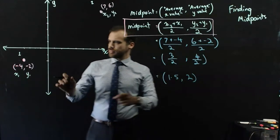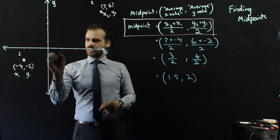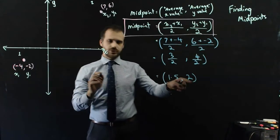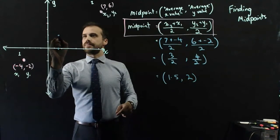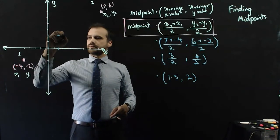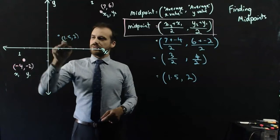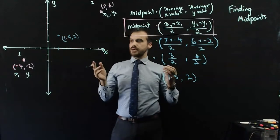This is the midpoint. So, the midpoint is at 1.5, there's 1, there's 1.5 right there, 2, 1, 2, and there is our midpoint.